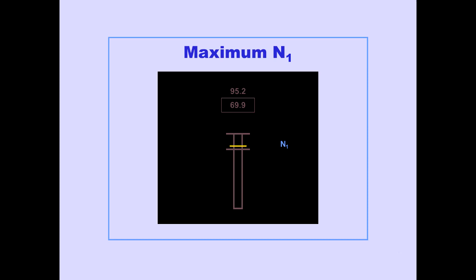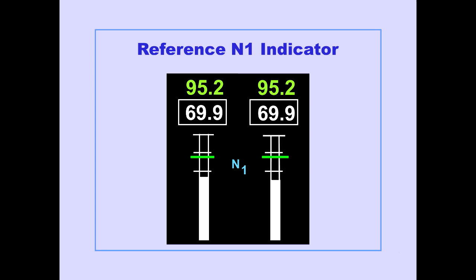Maximum N1 is displayed as amber lines and displays the maximum thrust rating for the engine. The N1 indication remains white when maximum N1 is reached. Reference N1 indicators display the reference N1 RPM selected by the FMS.